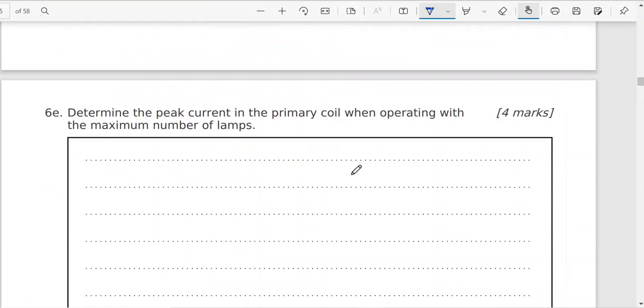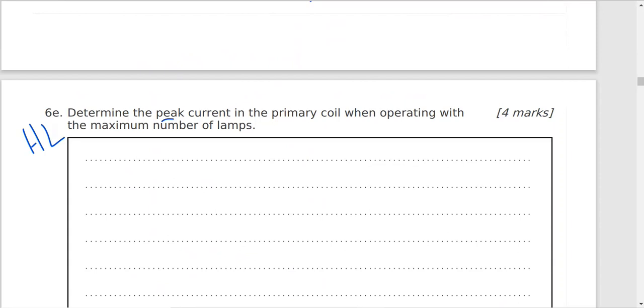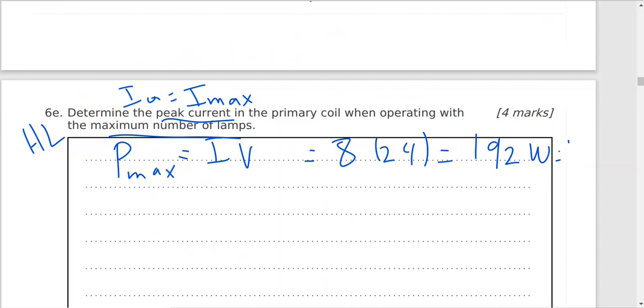Last part of this question, also for high level student. Determine the peak current, the peak current, the maximum current I maximum or I naught, in the primary coil when operating with maximum number of lamps. So first we have to find the maximum power. So P maximum will equal I times the voltage. Current is 8, voltage 24, and this will give us 192 watt. This is P out.